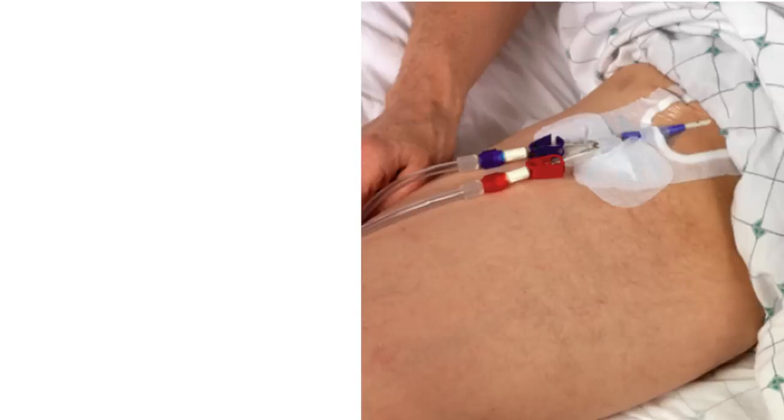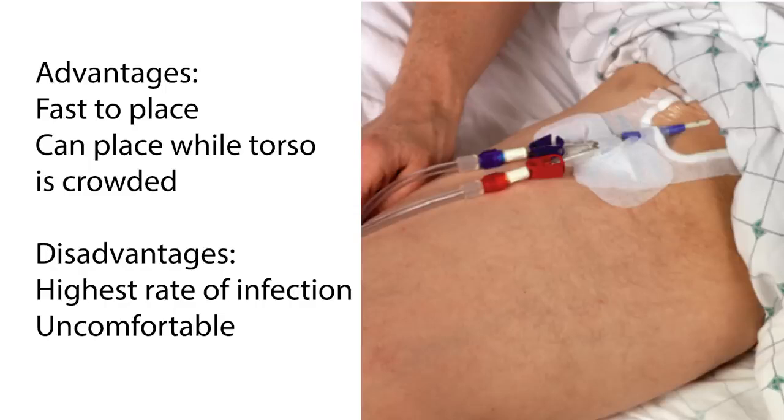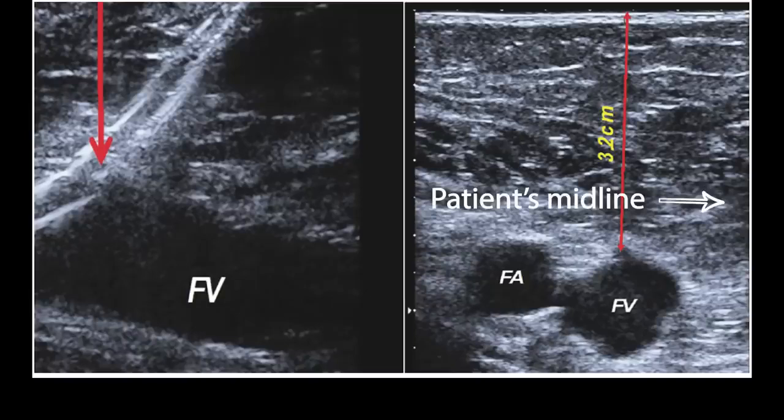Finally, the femoral line is the archetypical crash line. This line has the highest rate of infection and is not comfortable to have in, but you can place it while people are crowding around the top of the patient. Remember, the vein is medial to the artery, so if you can feel a pulse, aim medial to the pulsation.